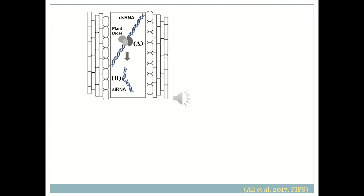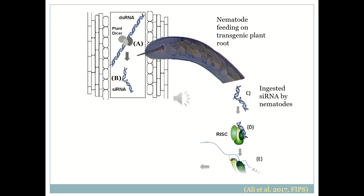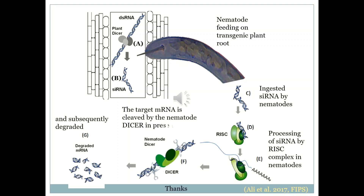But if the plant Dicer does so, then in the next step these small interfering RNAs are ingested by the feeding nematodes on the transgenic plant. The small interfering RNA is recognized by the RNA-induced silencing complex, or RISC machinery, of that plant parasitic nematode, and unwinding of its sense and antisense strands takes place. A proportion of the RISC complex loaded with the antisense strand then interacts with the corresponding mRNA of the target gene in the nematode.